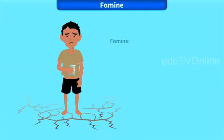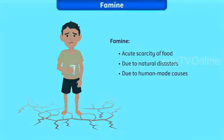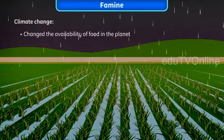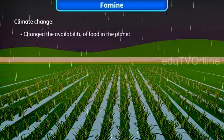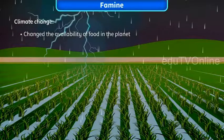Let us learn about famine. Famine is the acute scarcity of food which can be caused due to natural disasters such as droughts and floods, and human-made causes. Climate change plays a major role in the availability of food on the planet. The increasing effect of climate change is threatening the production of food worldwide.